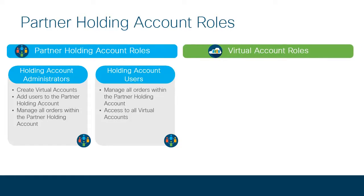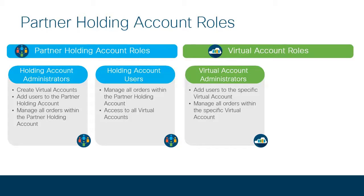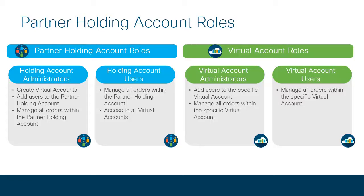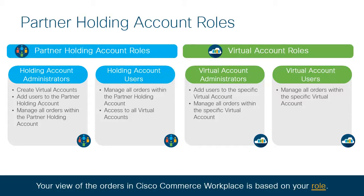Virtual account roles restrict users to the specific virtual account. There are two main roles within a virtual account. Virtual account administrators can add users to the virtual account and also manage orders assigned to the virtual accounts, while the virtual account users can only manage all orders within the specific virtual account. Note that your view of the orders in Cisco Commerce Workspace is based on your role — a Partner Holding Account Administrator will see all orders associated with the Partner Holding Account, while the Virtual Account Administrator will only see the orders associated with a specific virtual account in CCW.